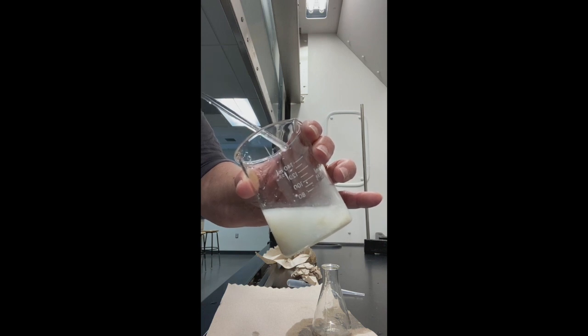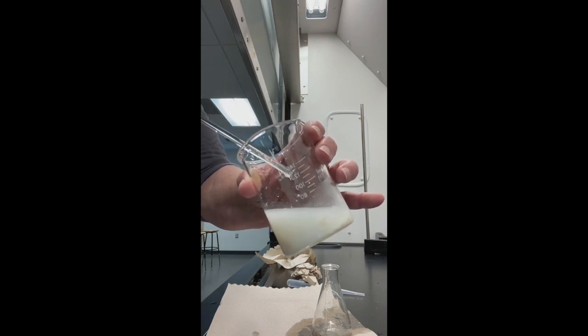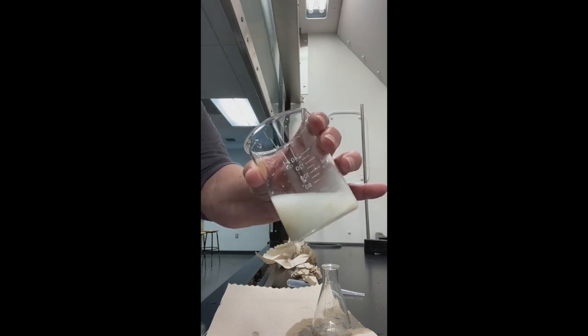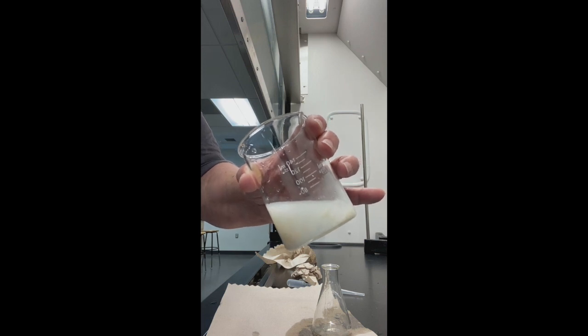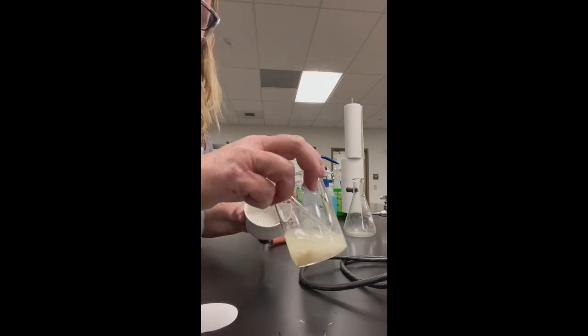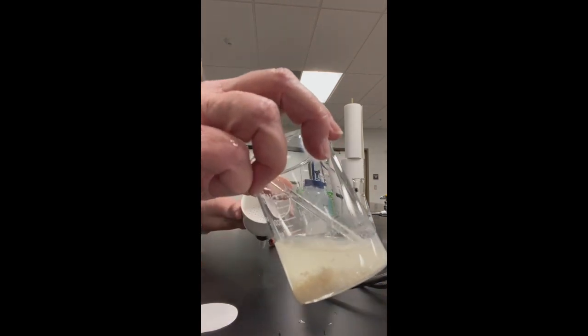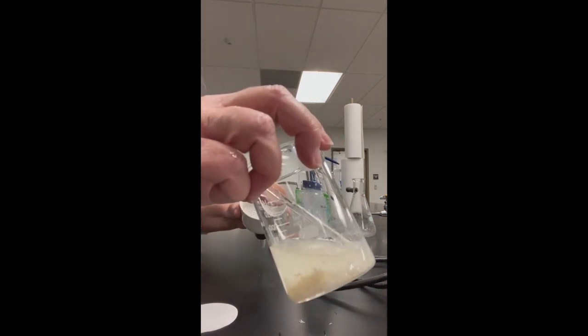Our next step is to recrystallize these because these are crude crystals and we need to make them nice and clean and pure so we can take a melting point. Now I do have my solid and the amber color is gone. So it didn't make any difference that that was there.